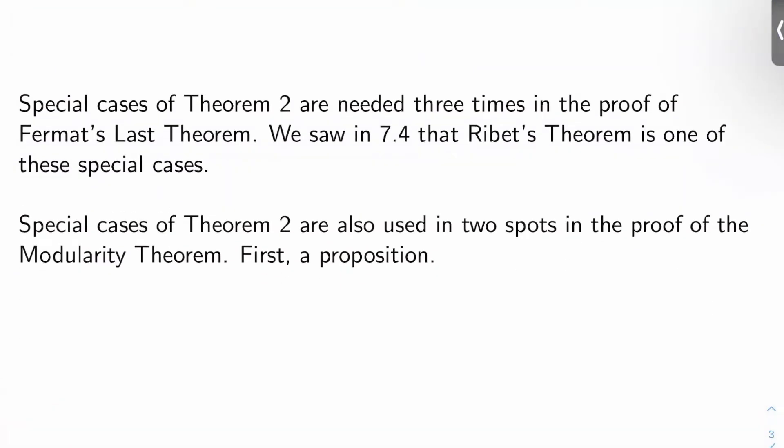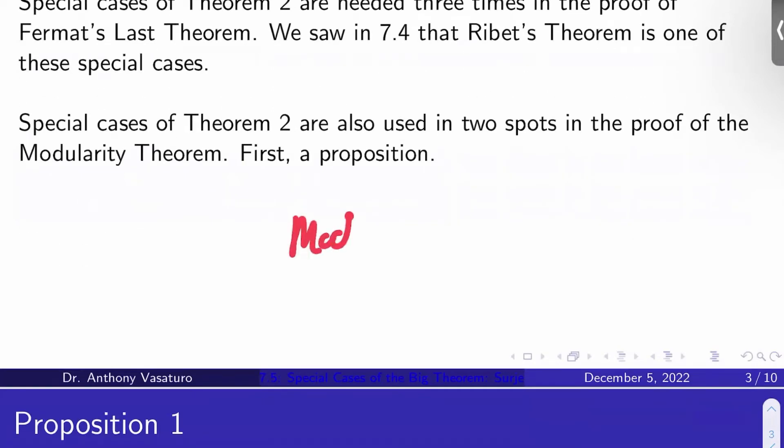Special cases of that theorem are needed three times in the proof of Fermat's Last Theorem. Rivet's Theorem, as we saw in the 7.4 video, is one of these special cases. So basically, we have modularity implies FLT. Rivet's Theorem is used here as one of the three special cases of Theorem 2. And then there are essentially two other special cases of Theorem 2 used in the actual proof of modularity. We'll look at those in the next videos.